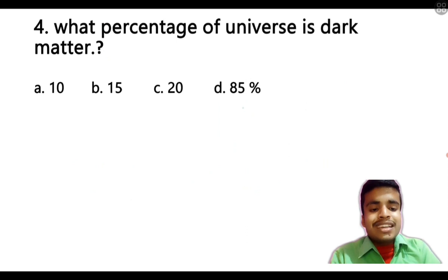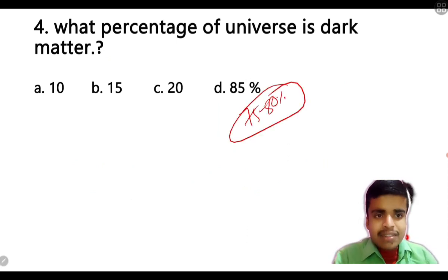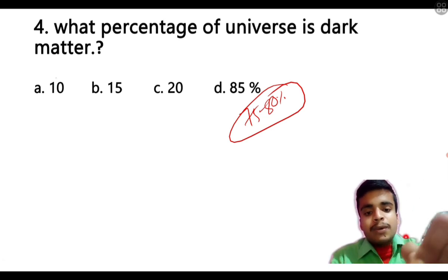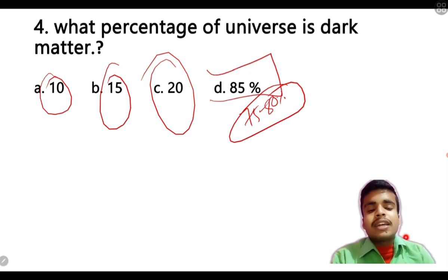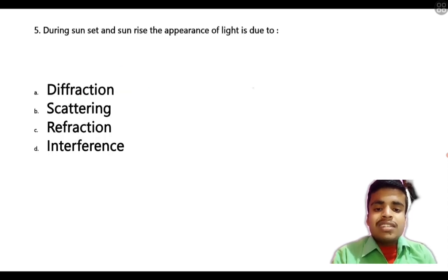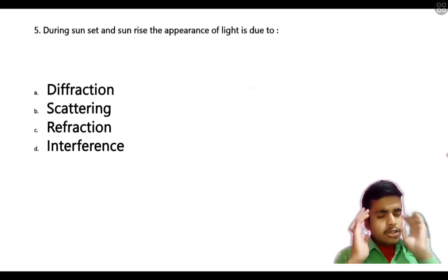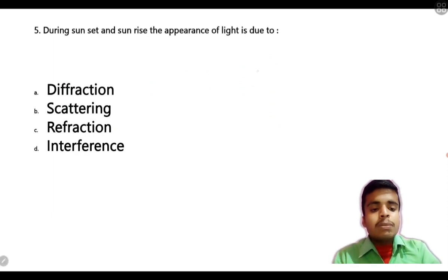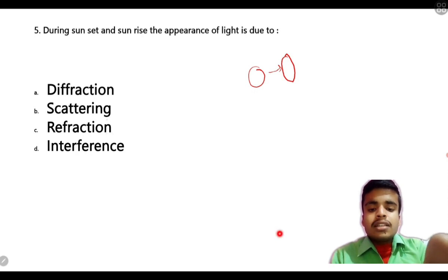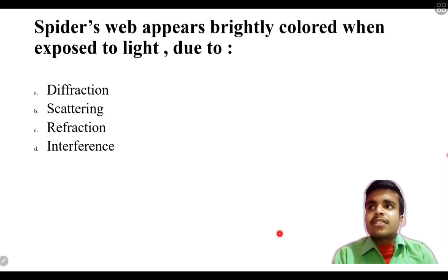Next question: what percentage of the universe is dark matter? The options were around 75 to 80 percent range, but the majority — around 85% — of the universe is dark matter, with only a small portion being ordinary/white matter. So dark matter is the maximum in our universe. Next: during sunset and sunrise, the appearance of red/orange light is due to the scattering effect of light.